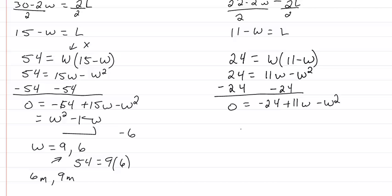So now we have 0 equal to negative 24 plus 11W minus W squared. We're going to change all our signs and put that in order. So we get W squared minus 11W plus 24.